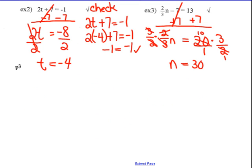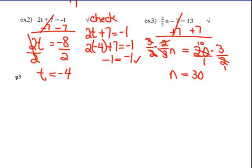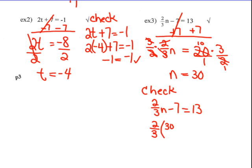I have to do a check on that problem. I'm going to write the word check. The equation is two-thirds of n minus 7 equals 13. I believe my n value is 30. So two-thirds times 30, written as a fraction, minus 7 equals 13. 3 goes into 30 ten times — I can cross cancel. So 2 times 10 is 20. 20 take away 7 is 13. I have 13 on the left side, which equals 13 on the right side. The answer to my equation is n equals 30. My equation is balanced to 13 equals 13 when I replace the variable n with 30.